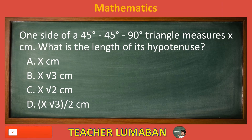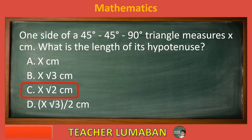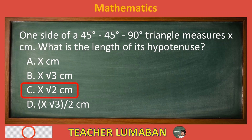The correct answer is Letter C: X square root 2 cm. One side of a 45-45-90 degree triangle measures X cm. The length of its hypotenuse is X square root 2 cm.